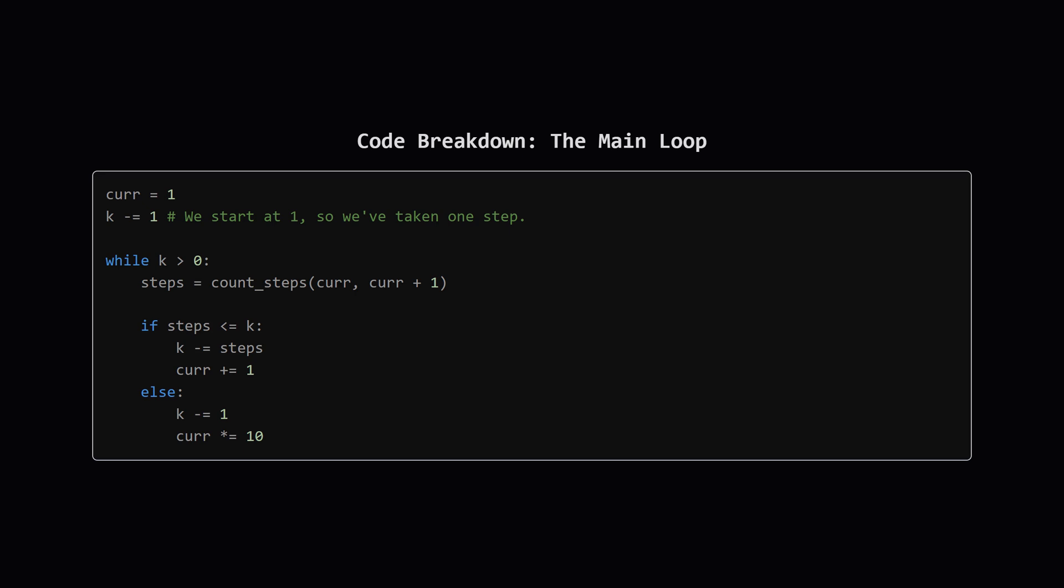Otherwise, if the target is inside this group, we move down. We use up one step to do that. So we subtract 1 from k, and our new current number becomes its first child, which we find by multiplying by 10.